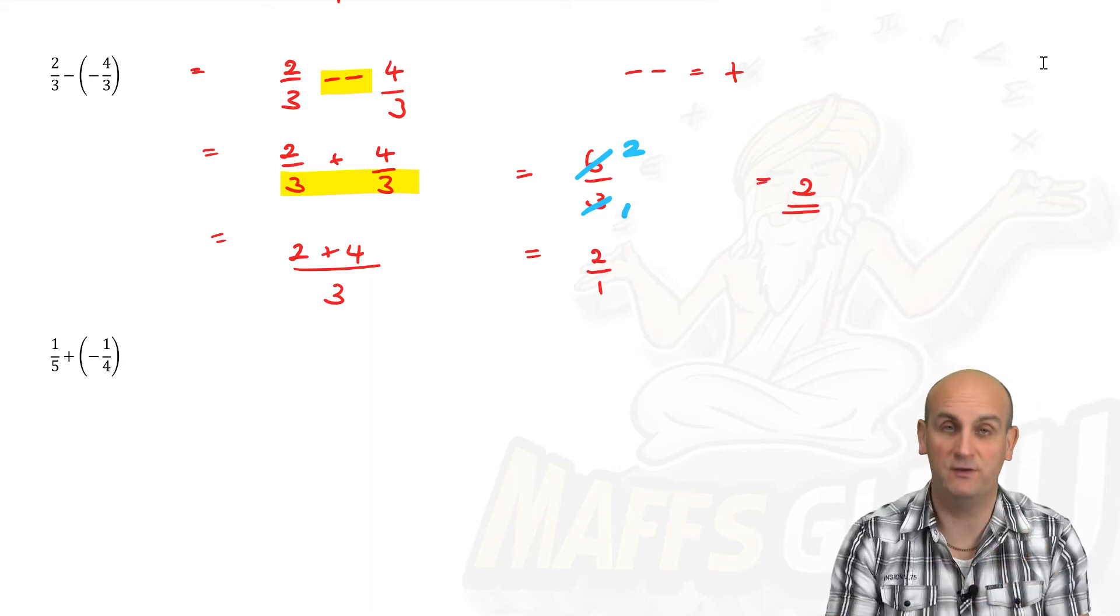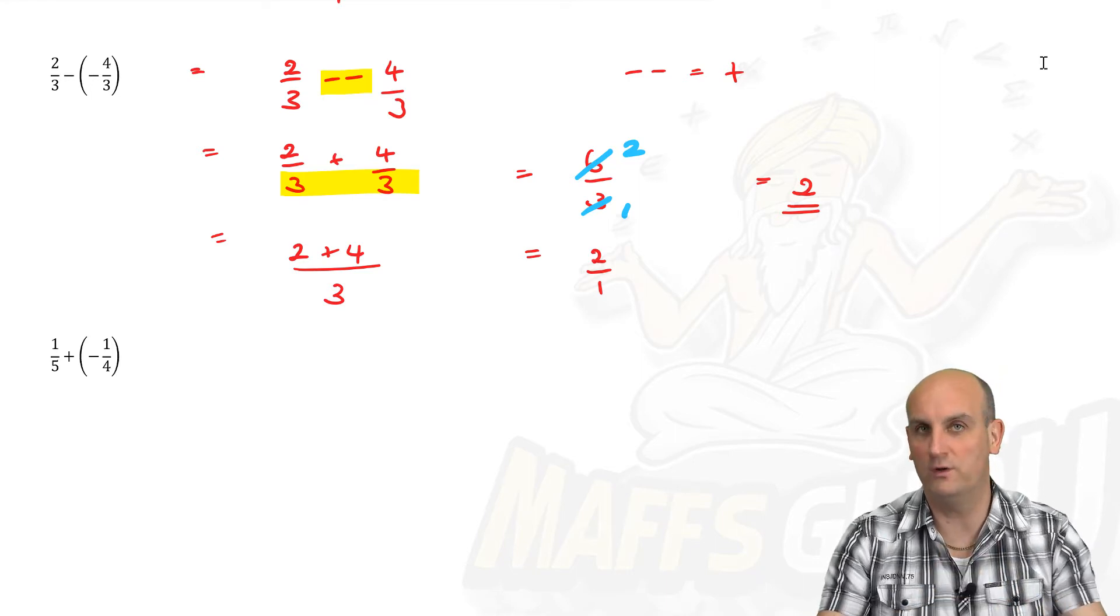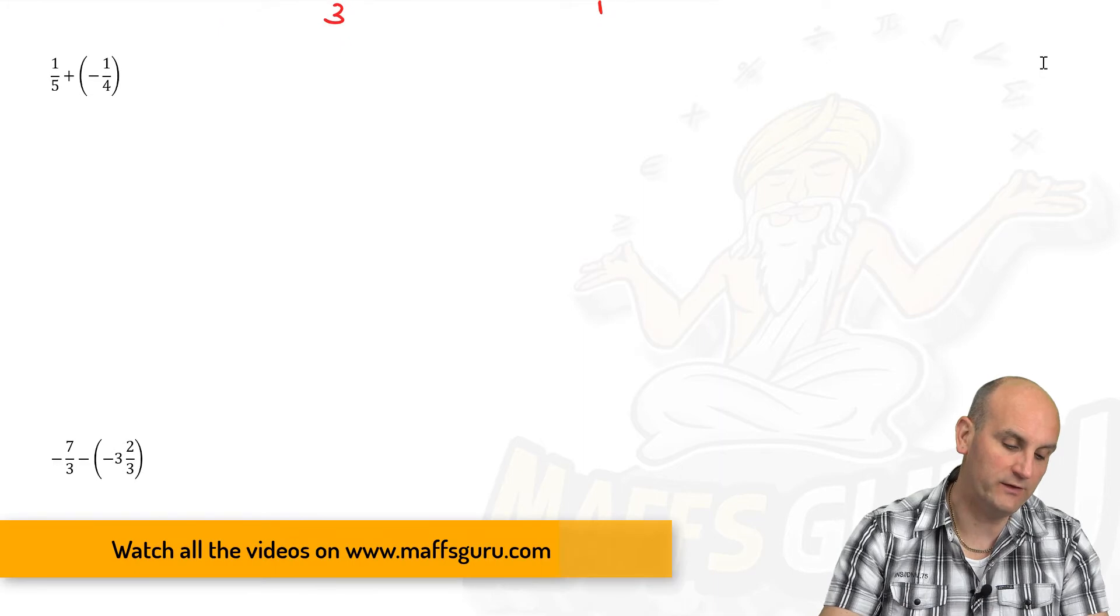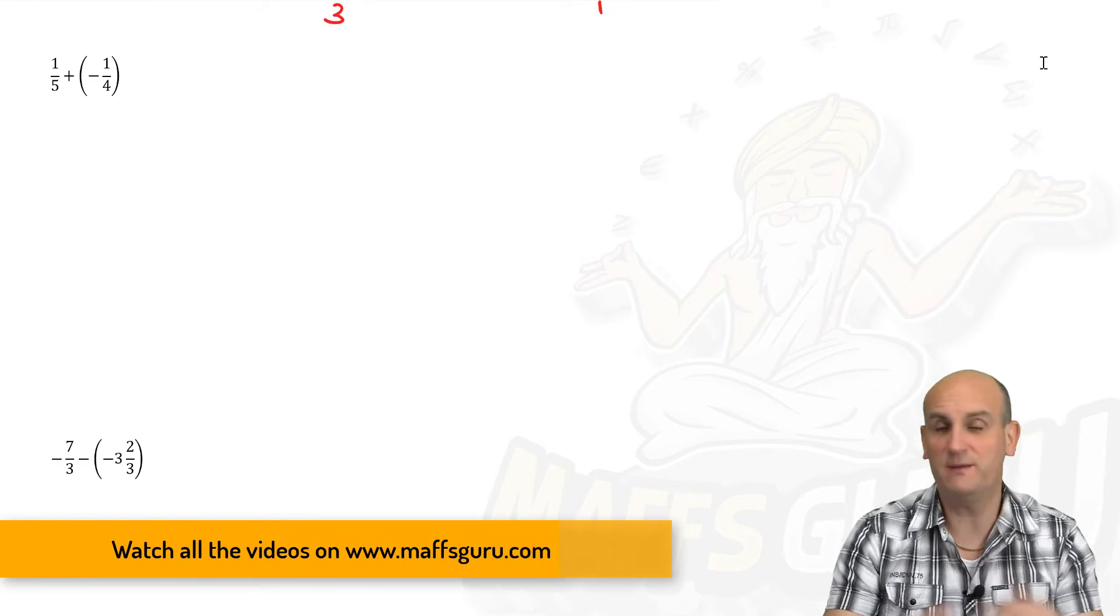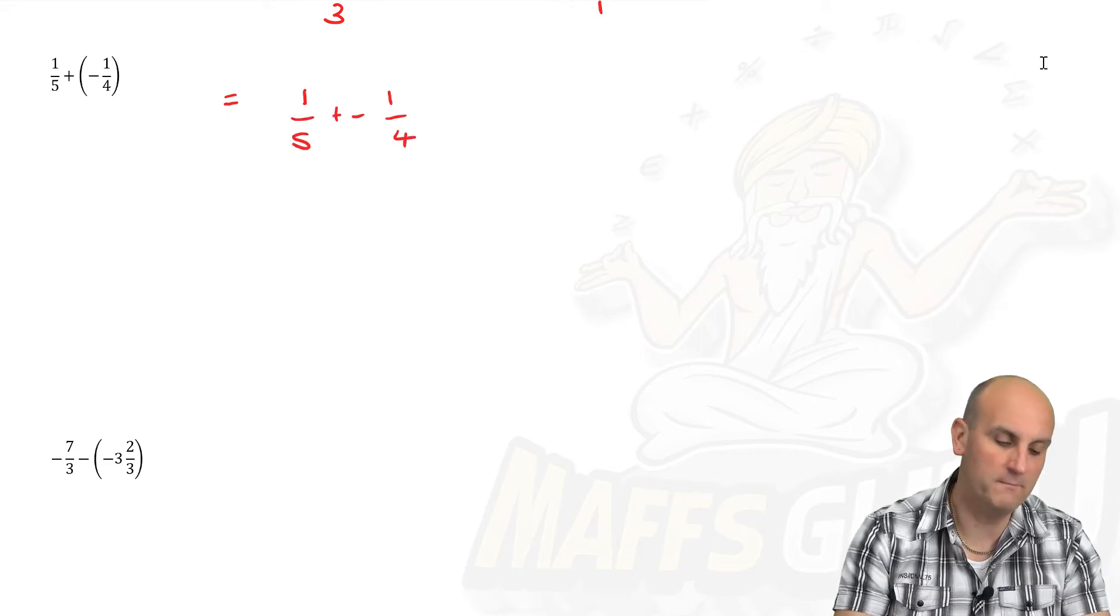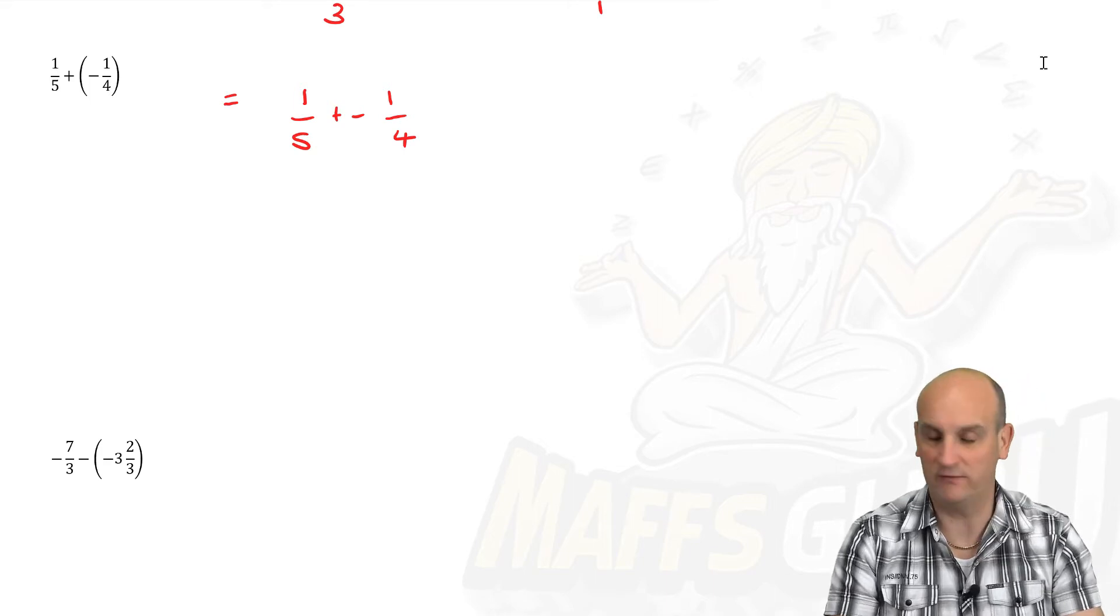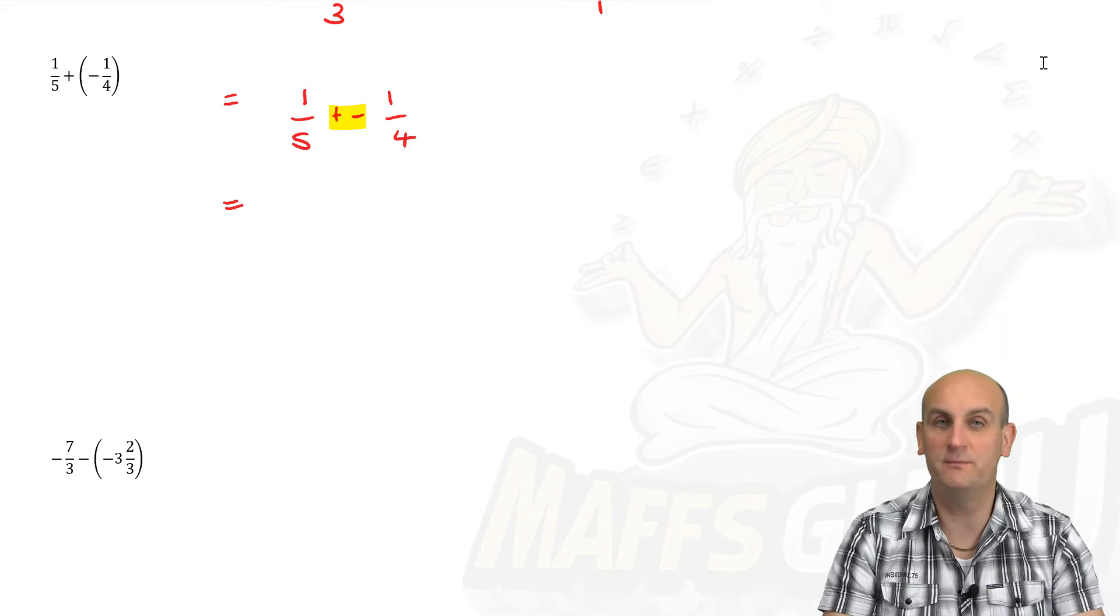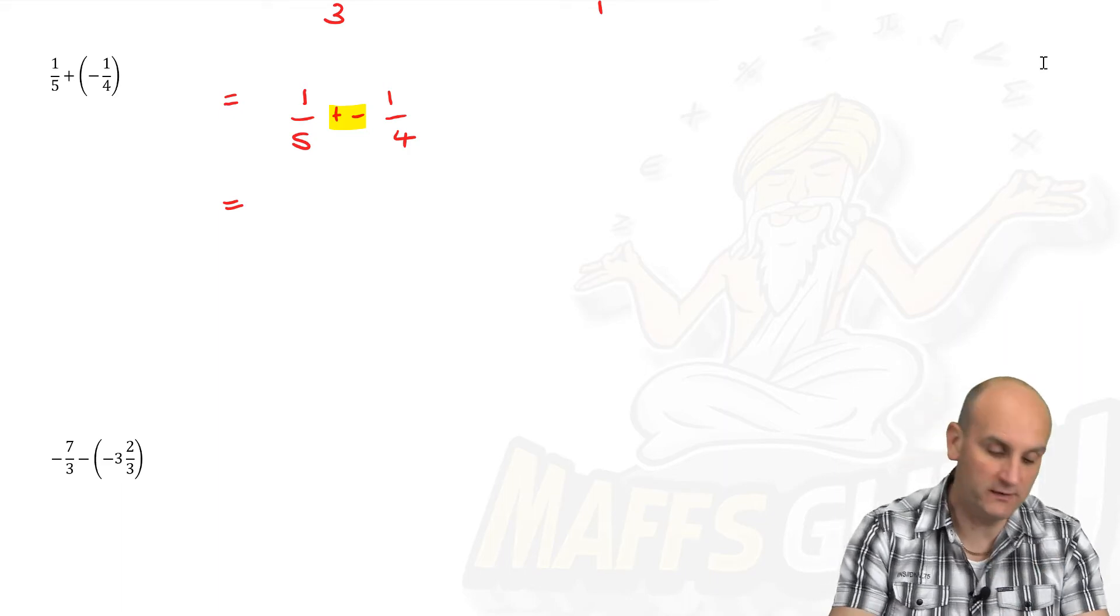And again, if you're not sure what's going on here, there is a previous video that explains all of this stuff. It's the one before this one. All right, we're going to now do plus and a minus. The examples become fairly repetitive, but follow through with me. We've got the brackets again. They're just there to help me see that minus sign. So one fifth plus minus one quarter. Plus minus. It doesn't sound right. So I'm going to get rid of that. Plus and a minus. What does a plus and a minus become? It becomes a minus.